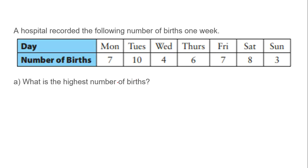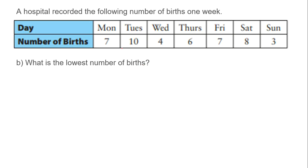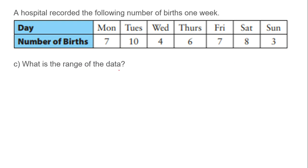So let's go. What is the highest number here? The highest number would be 10. What's the lowest number? The lowest number would be 3. So what's the range of data? 10 minus 3 — the range would be 7.